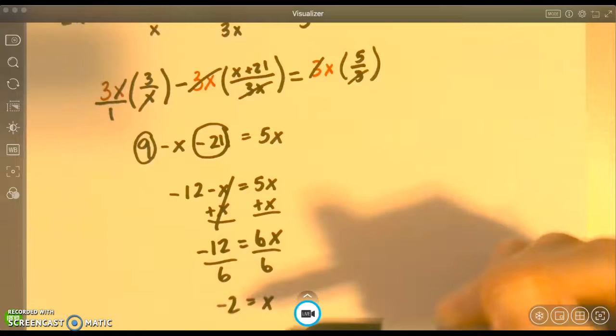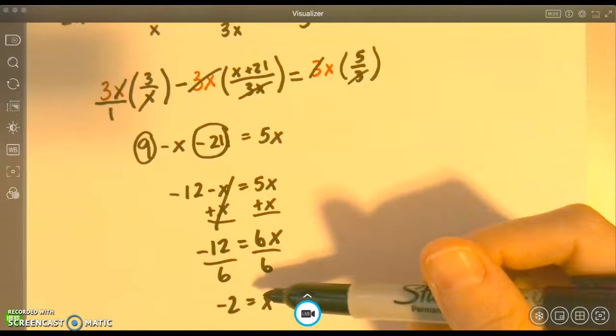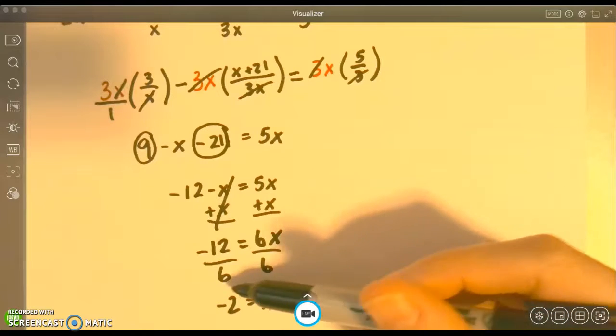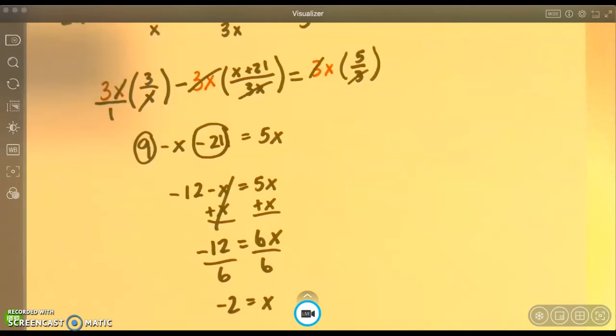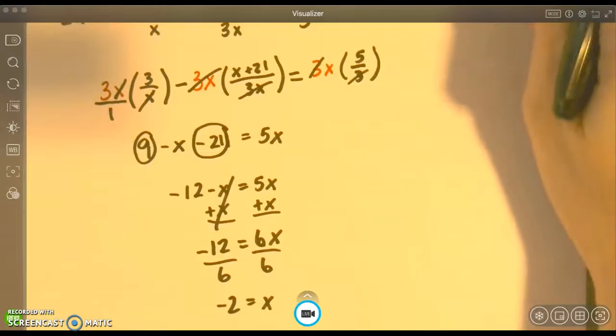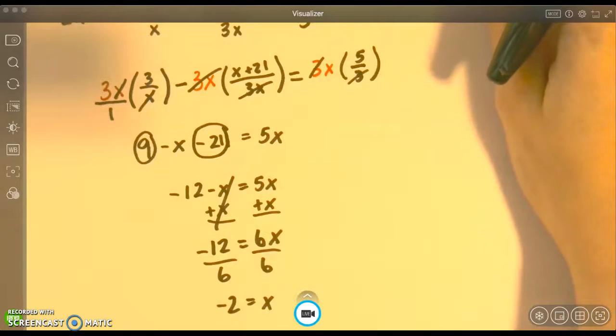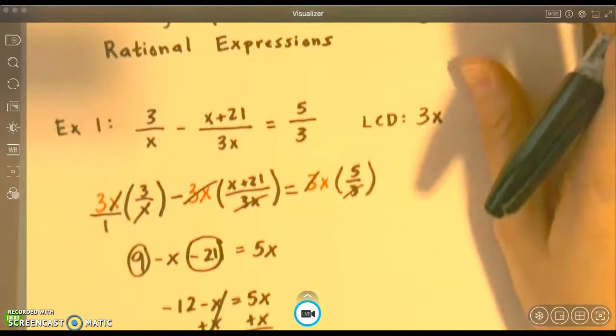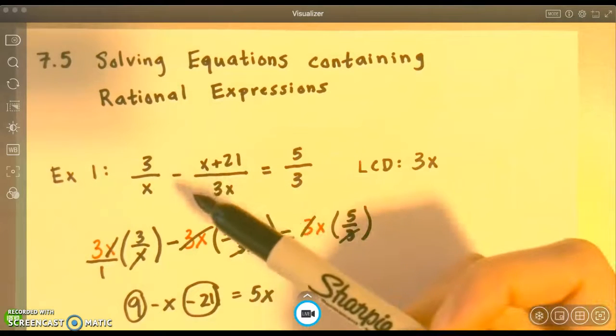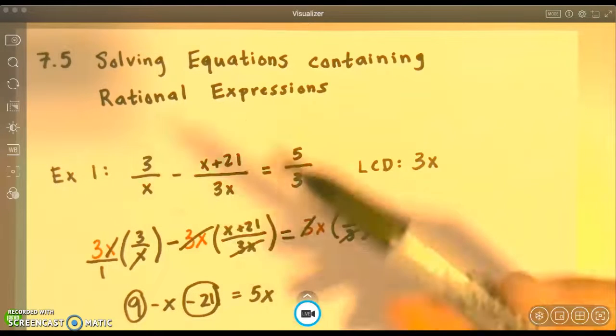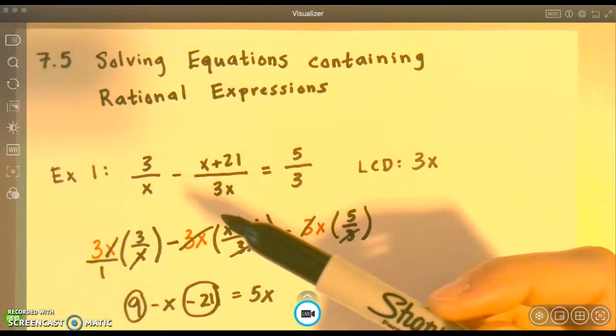Now, we have to check one thing because we're dealing with fractions. This is my proposed answer. I need to make sure that if I plug in that x value of -2 back into the original problem, it's not going to give me a 0 in the denominator because we're not allowed to divide by 0.